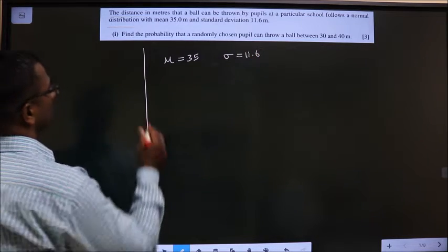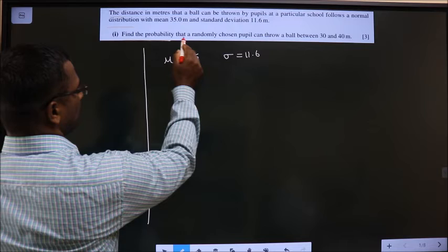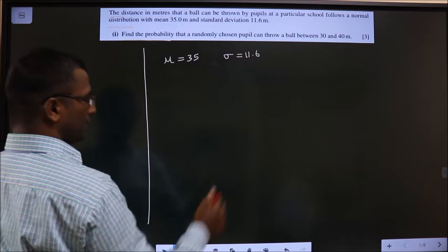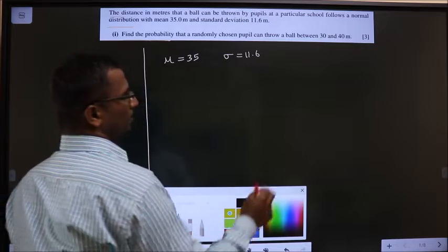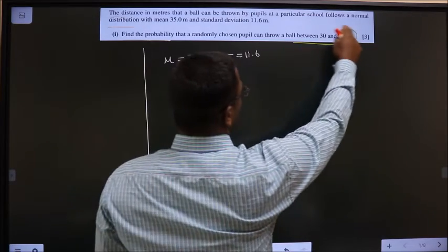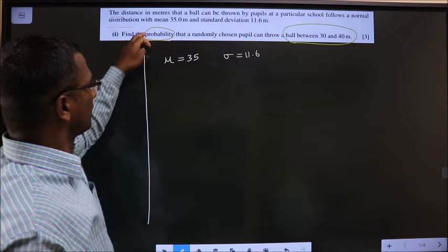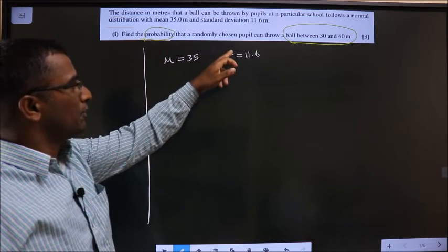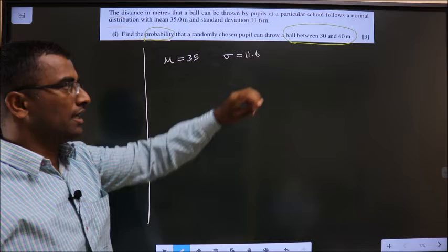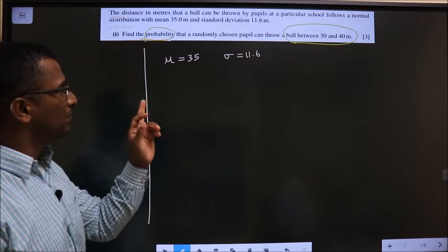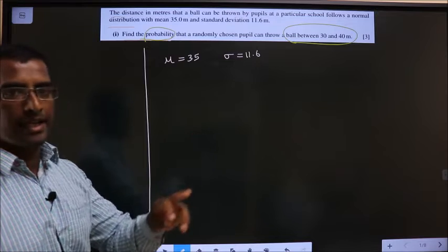Clear? Now, find the probability that a randomly chosen pupil can throw a ball between 30 and 40 meters. So you need to find the probability that a pupil can throw a ball between 30 and 40 meters. You need probability between 30 and 40.